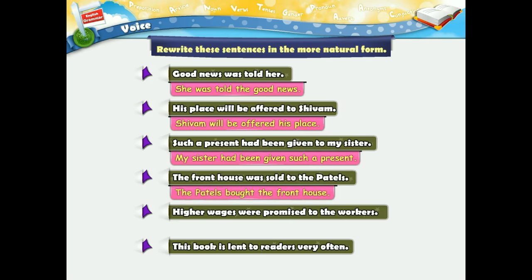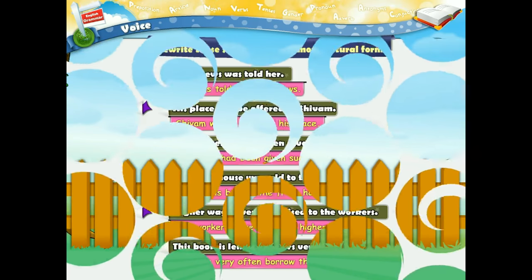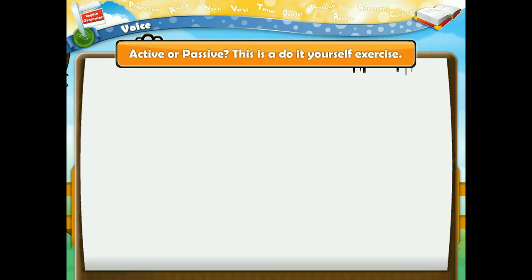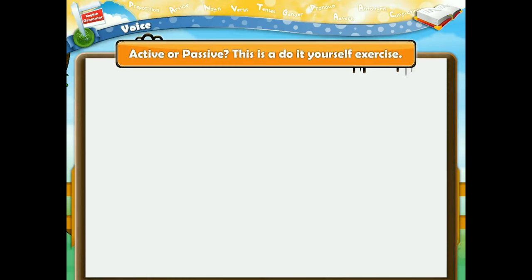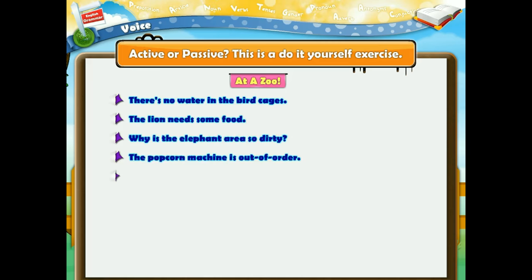Active or passive? This is a do-it-yourself exercise. At a zoo: There's no water in the bird cages. The lion needs some food. Why is the elephant area so dirty? The popcorn machine is out of order. Why is the zebra walking freely throughout the zoo? We need some fish for the birds. The sitting areas are very dirty today. I'd like to see the sign showing the way to the tiger safari.